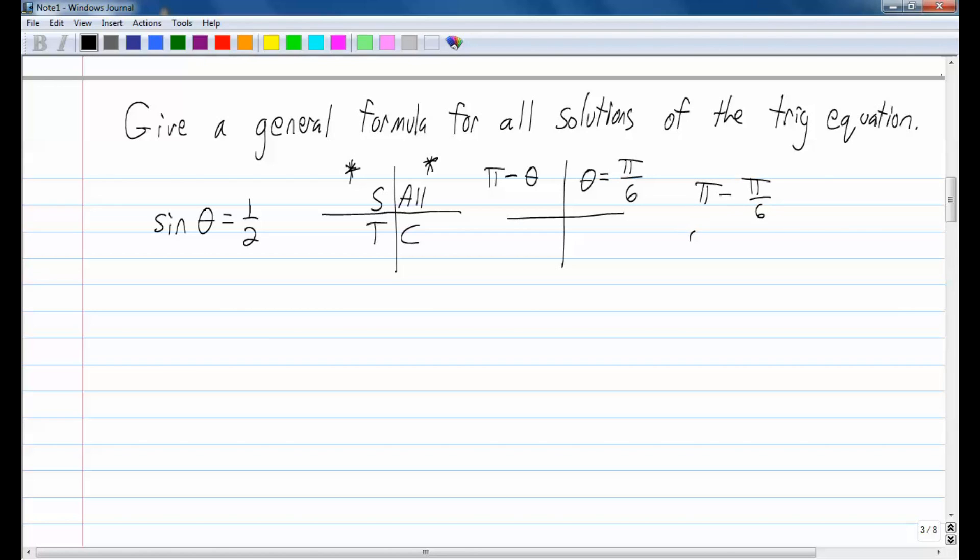Well, 1 pi is the same as 6 pi over 6. So 6 pi over 6 minus 1 pi over 6, that's 5 pi over 6.